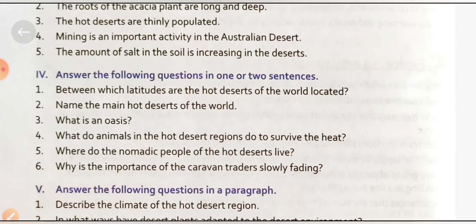Next question: 'What is an oasis?' An oasis is a lush green place in the desert where water comes up to the surface from an underground source. Where underground water reaches the surface, greenery is found around it — that is called an oasis.